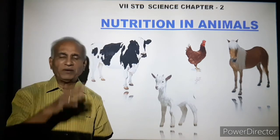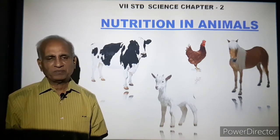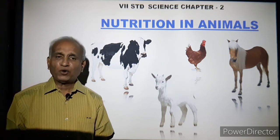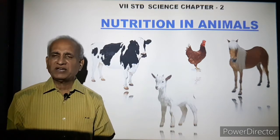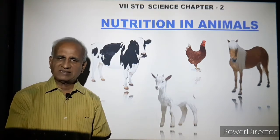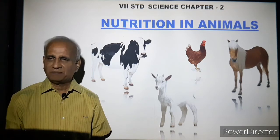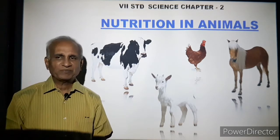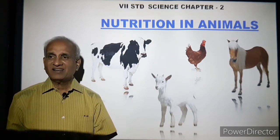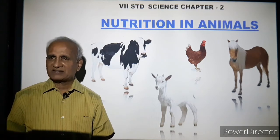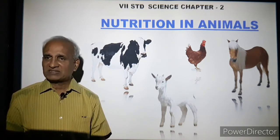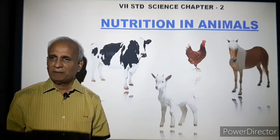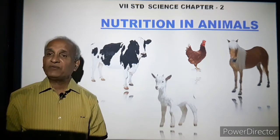Coming to omnivores: human beings are omnivores, bears are omnivores. A crow is an omnivore — it eats everything. If it gets nuts and seeds it eats them; if it gets worms, it eats them too. So the crow is an omnivore. Humans mostly eat both plant products as well as animal flesh.